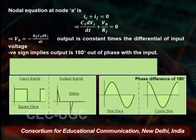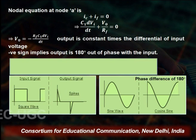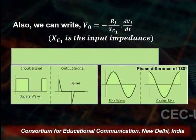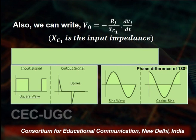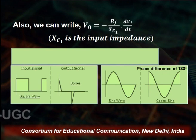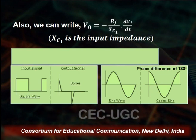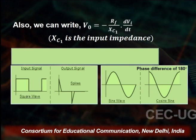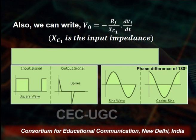The negative sign implies that the output current is 180 degrees out of phase compared to the input current. Therefore we are able to write Vout = −RF·C1·dV1/dt, or equivalently Vout = −(RF/Xc1)·V1, where Xc1 is the input impedance offered by the capacitor. The input reactance of the capacitor is a function of the frequency of the input signal, and we remind ourselves that we are processing only AC signals in this case.